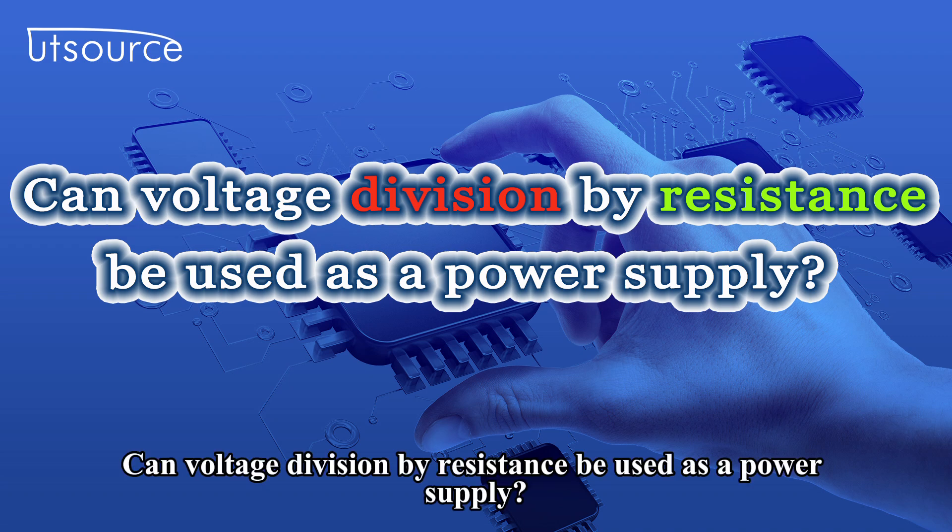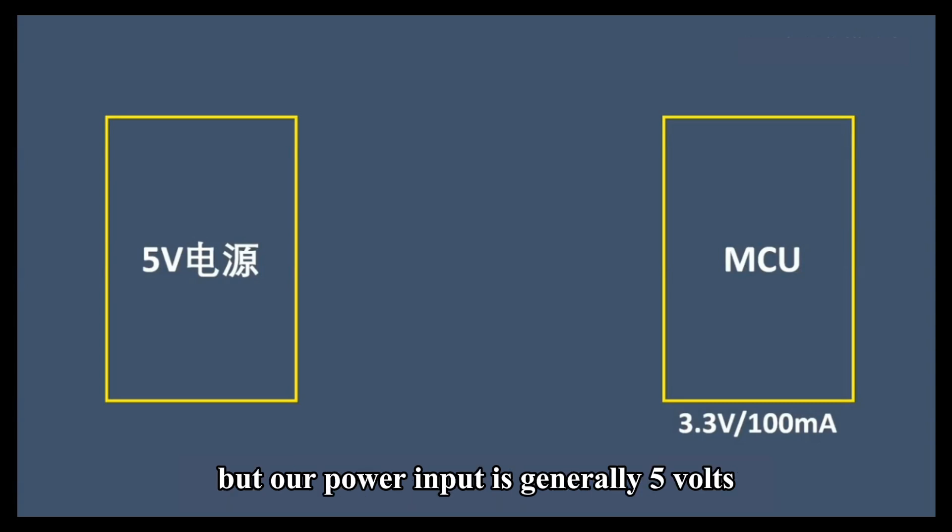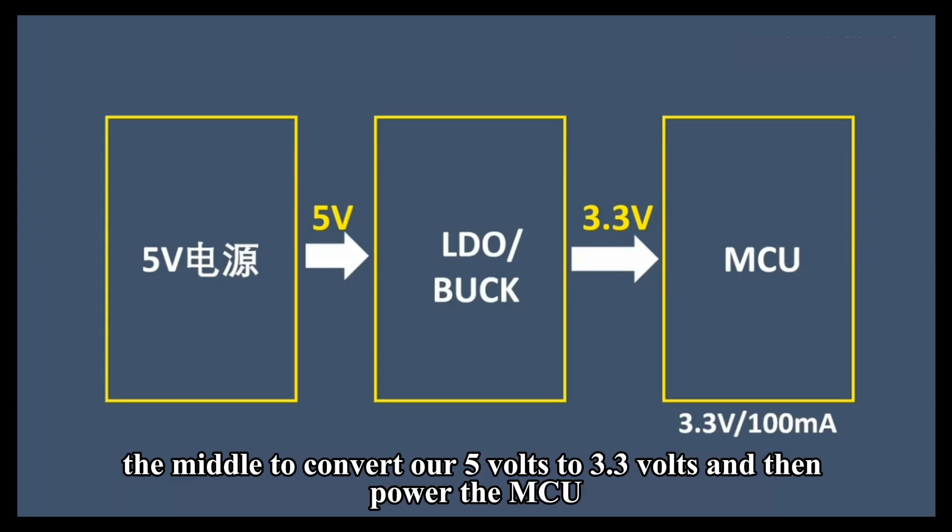Can voltage division by resistance be used as a power supply? Our commonly used MCU requires a voltage of 3.3 volts and its current is roughly around 100 milliamps, but our power input is generally 5 volts. The common design approach is to add an LDO or buck circuit in the middle to convert our 5 volts to 3.3 volts and then power the MCU.